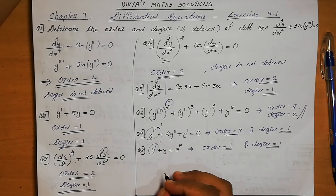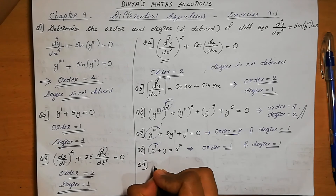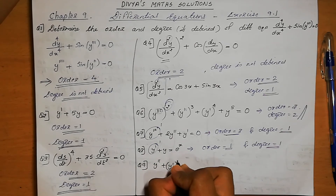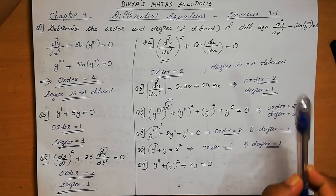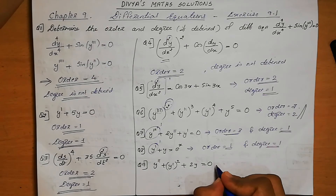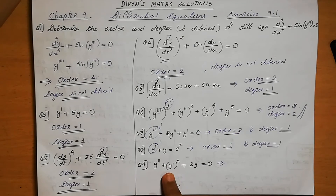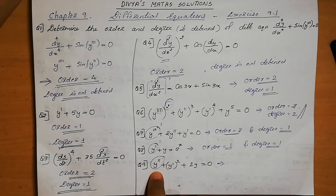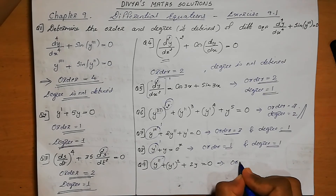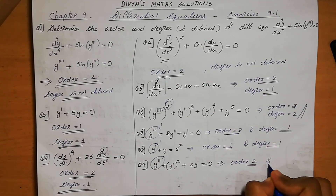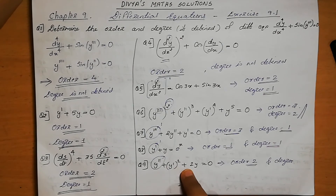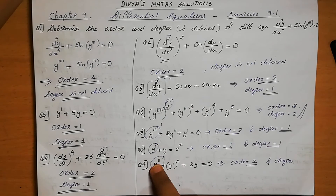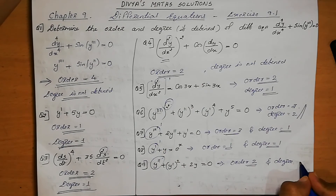Question number 9: y'' + (y')² + 2y = 0. The highest order derivative present is y'', so the order equals 2. This is in the form of a polynomial equation. The highest power of the highest order term (y'') is 1, so the degree equals 1.